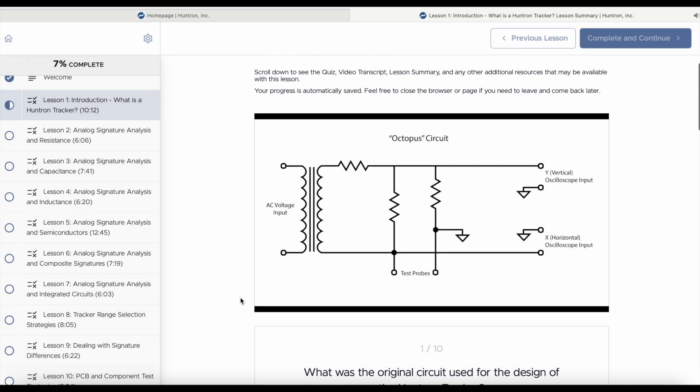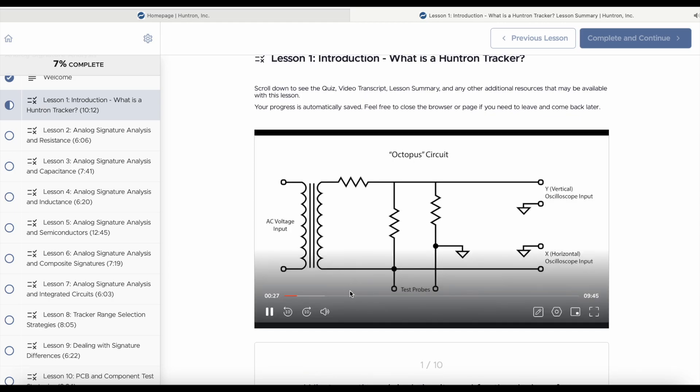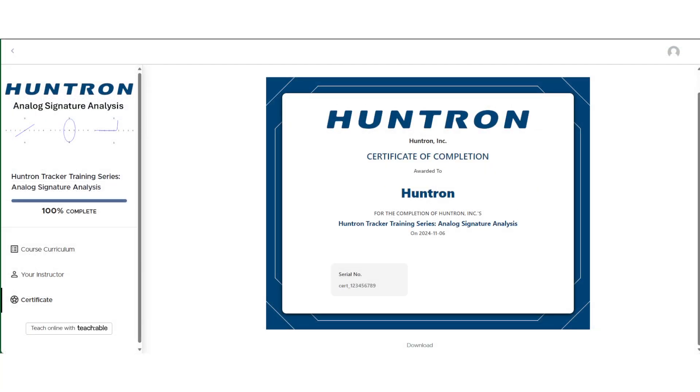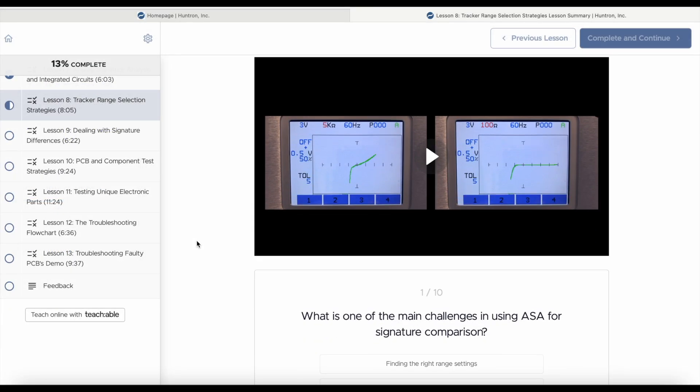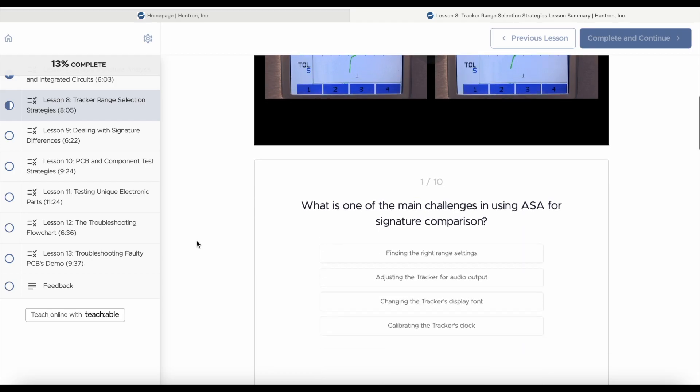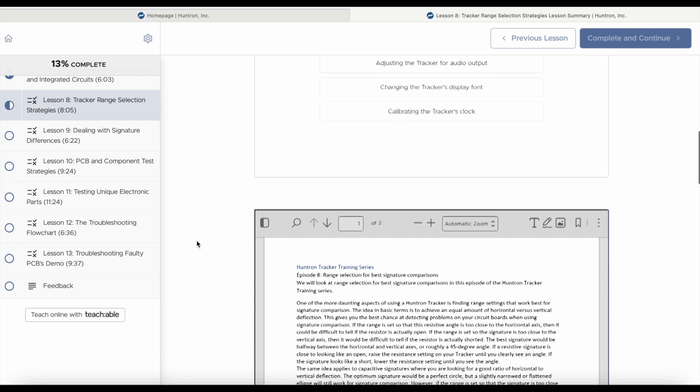Based on Huntron's comprehensive factory training, this course offers the ability to earn a certificate in Analog Signature Analysis from the leader in ASA. Find out how analog signature analysis can help you become more effective troubleshooting your electronic circuit boards, just as it has with many people worldwide.